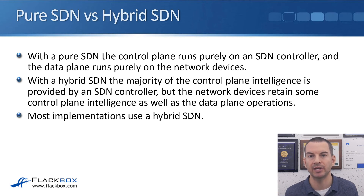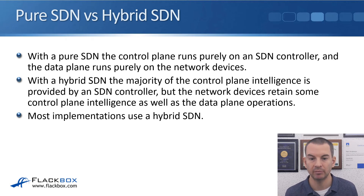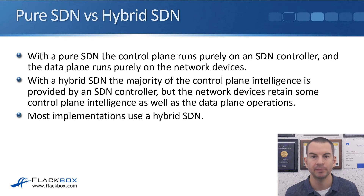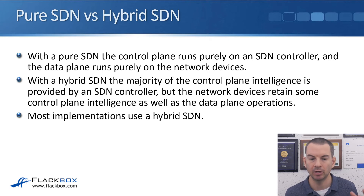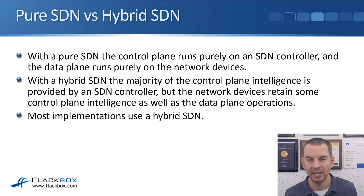We can run SDN either as a pure SDN or as a hybrid SDN. With pure SDN, the control plane runs purely on the SDN controller and the data plane runs purely on the network devices. With hybrid SDN, the majority of the control plane intelligence is provided by the SDN controller, but the network devices retain some control plane intelligence as well as the data plane operations. Most implementations, including those used by Cisco, use a hybrid SDN because it can be more efficient and higher performance.